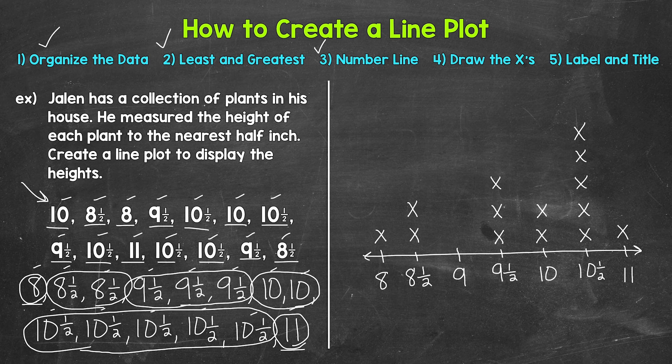After drawing the X's, we can double check we have the correct amount. We have fourteen plant heights, so we should have fourteen X's — and we do. Notice all the X's are basically the same size, the stacks are straight and lined up. Just try to be as neat as possible.